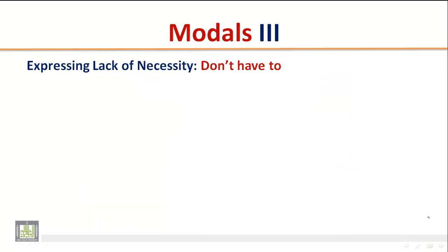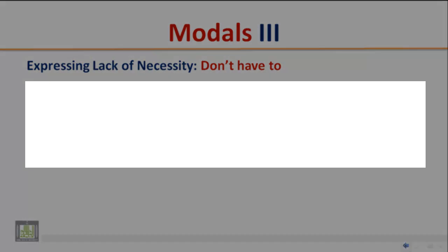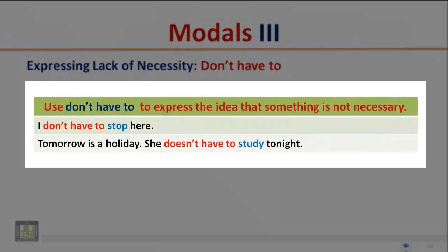Expressing lack of necessity: 'don't have to'. Use 'don't have to' to express the idea that something is not necessary. Examples: 'I don't have to stop here' — this implies that it's not necessary to stop here. 'Tomorrow is a holiday; she doesn't have to study tonight' — this implies it's not necessary for her to study tonight.